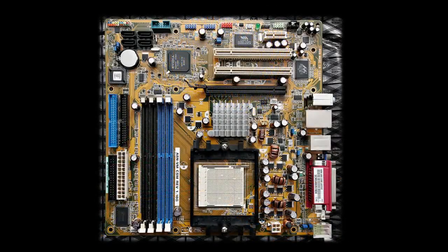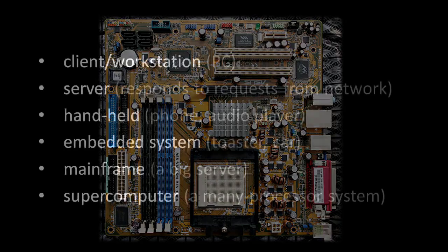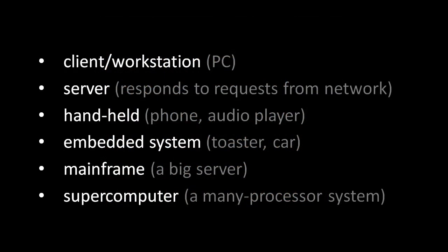All of these components need to get hooked together, so we plug them into what's called a mainboard, or sometimes called a motherboard. The mainboard provides power to the components and communication pathways between them. This description — CPU, memory, and I/O — really does apply to any computer, though we sometimes make distinctions between different classes of systems.